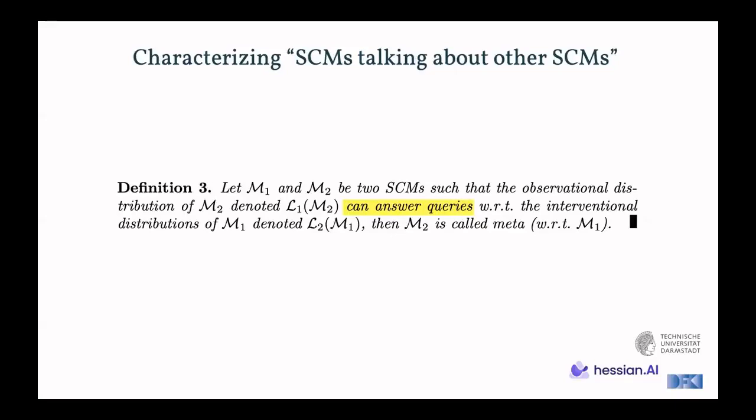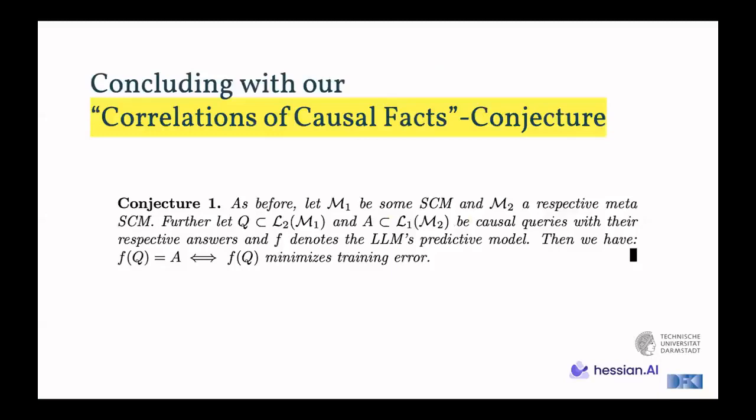In our full paper, we have an example guiding you through this more abstract notion now, but essentially we have two SEMs, and they align in such a way that the meta SEM has its observational distribution linked to the causal distributions of the SEM in question, in this case M1. And this now concludes with our conjecture, which we formalize as follows, based on the prior definition, that if M1 denotes again some SEM of interest, denoting natural concepts, and M2 is the respective meta SEM, that for any subset of queries, for example, on the interventional level of the SEM of interest, there will be some answers from the observational distribution of meta SEM where the LLM denoted by F here will answer the queries about the causal questions on M1 exactly with those answers from the meta SEM. And that this is actually equivalent to the training error minimization by the LLM on these questions. So essentially, we pose here that there will be correlations of causal facts. And these causal facts are part of the training data. And since they are correlated, they will actually optimize the LLM's behavior.